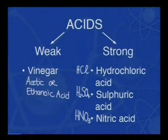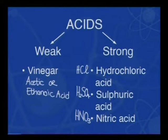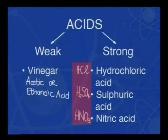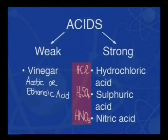There are three strong acids that are commonly used in chemical experiments, and you may have heard of them before. Hydrochloric acid has a chemical formula of HCl, sulfuric acid or H2SO4, and nitric acid with the chemical formula HNO3.